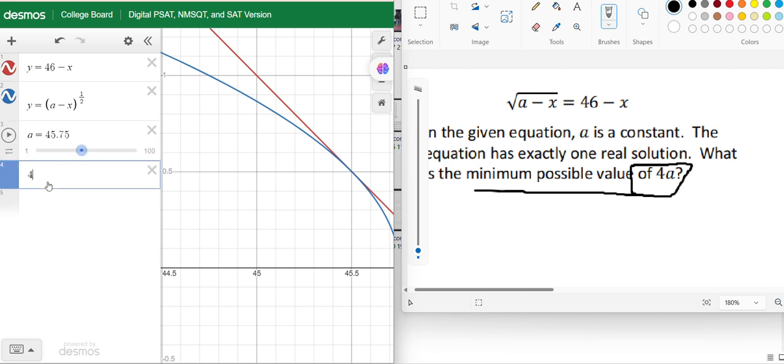So in this way we can solve this type of question very easily. Which means our minimum possible value is 45.75, so we have our answer: 4a equals 183.